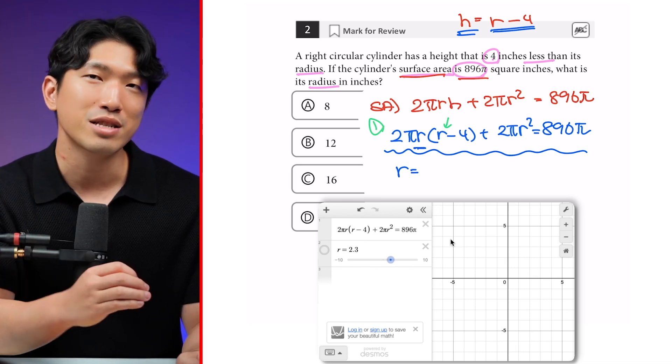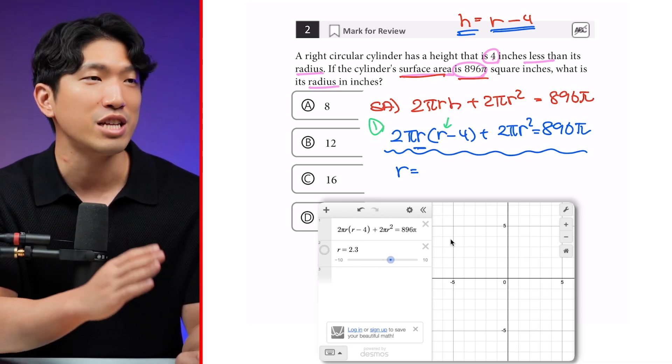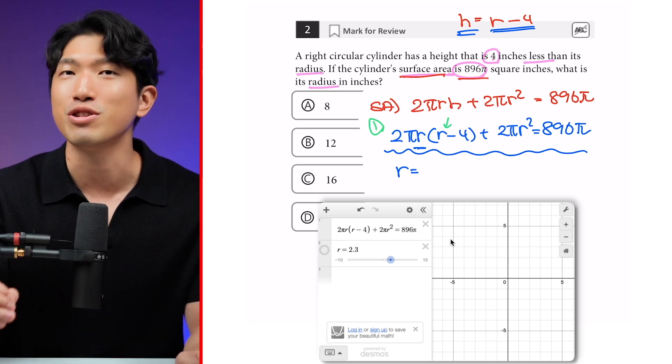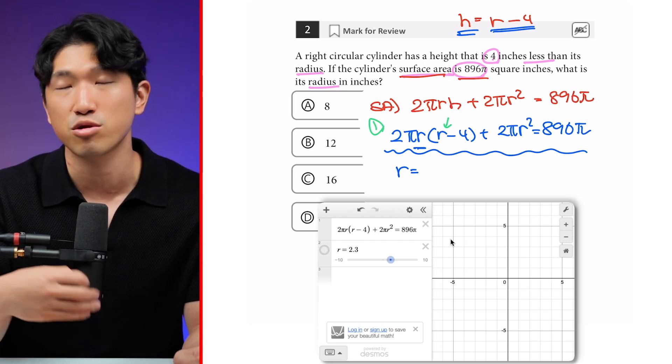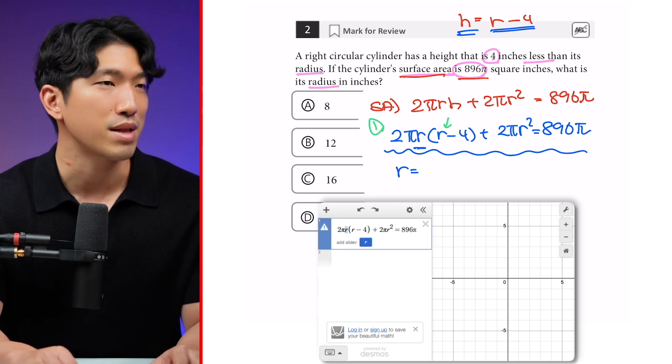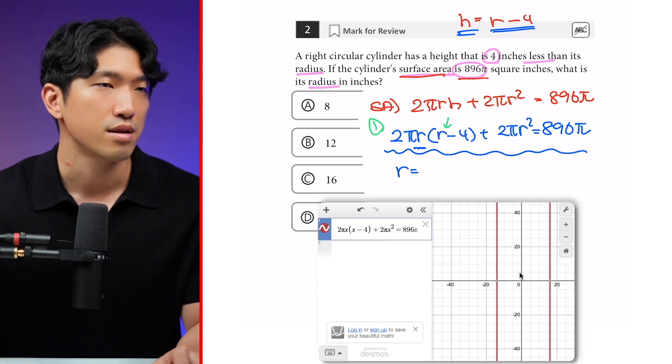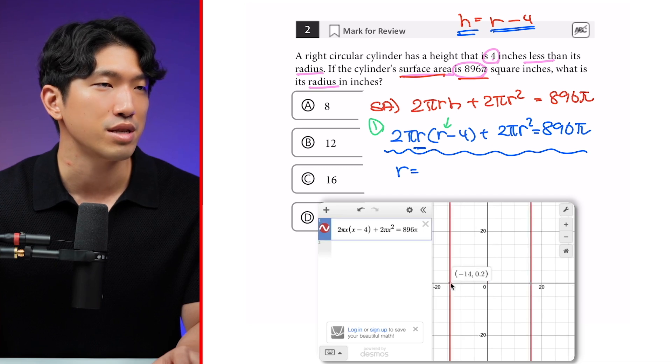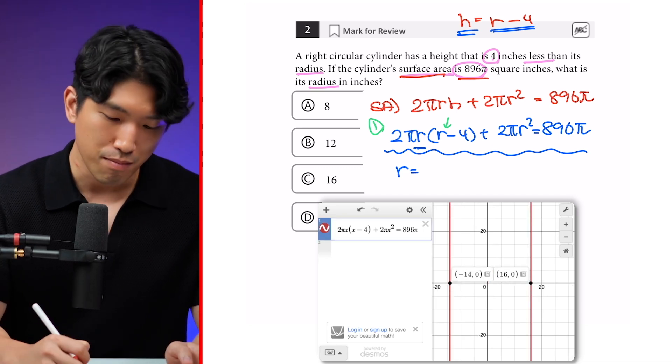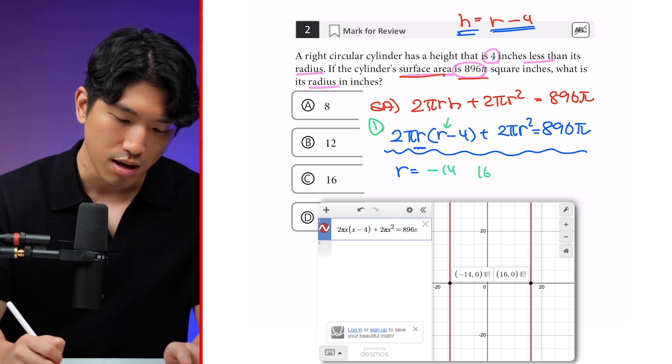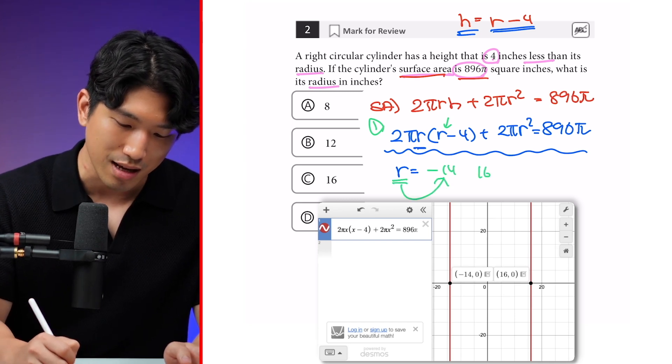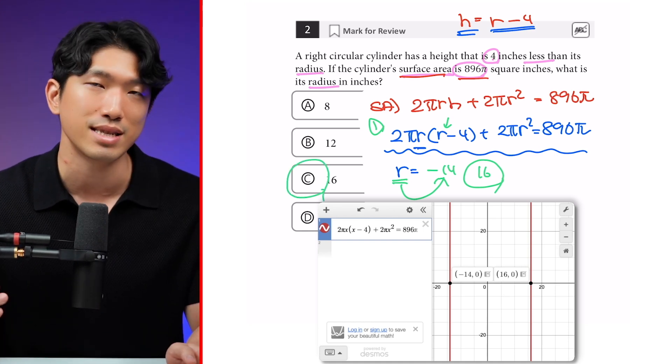So because we need either x or a y in the equation, I'm going to change all the r's with an x and go to the x-intercept. If you swap it out with y, go to the y-intercept. So if we swap it out, we are going to get this beautiful graph right here. And we see our x-intercepts are -14 and 16, which means our r can be -14 or 16. But because radius cannot be negative, our answer will be 16. Our answer is choice C.